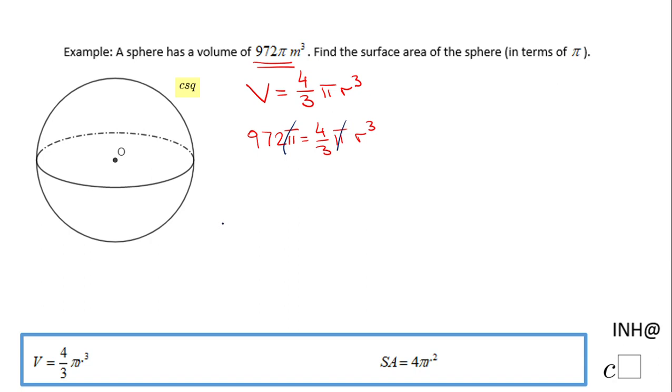And then multiply by 3 fourths, which is the reciprocal of 4 over 3, right? That will help us to get rid also of the four thirds, so we have here r cubed equals 3 over 4 times 972.